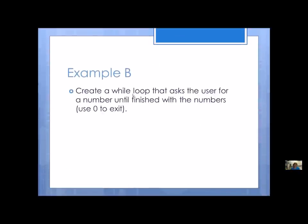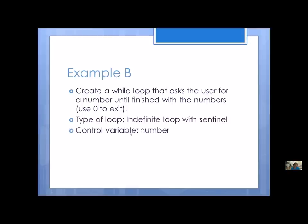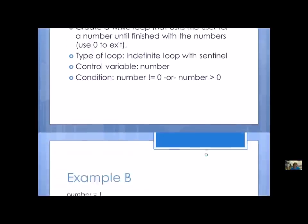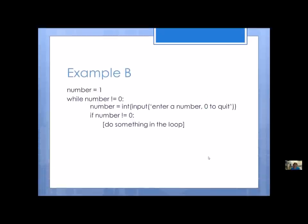Let's take a look at example B: create a while loop that asks the user for a number until finished with the numbers — use zero to exit. That's a clue that you're going to have a sentinel, so it's an indefinite loop with a sentinel. Your control variable is going to be the number the person is entering, and you're going to stop when you reach the sentinel — not equals to zero, or greater than zero depending on whether all values are positive. Here's what it might look like; we've done several of these.